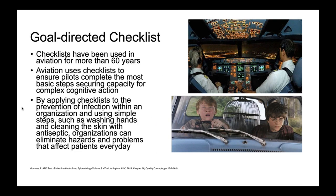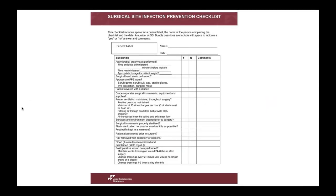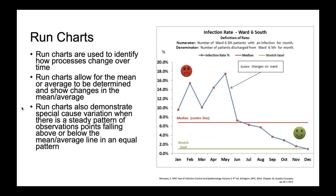Goal-directed checklists: checklists have been used in aviation for more than 60 years to ensure pilots complete the most basic steps, securing capacity for complex cognitive action. By applying checklists to the prevention of infection within an organization — using simple steps such as washing your hands and cleaning the skin with antiseptic — organizations can eliminate hazards that affect patients every day. Now here's the issue with checklists: you actually have to use them. If it just becomes another thing for staff to click through and check all the boxes as they go down, it defeats the purpose, because it takes away the action of actually checking to ensure you're doing the right thing.